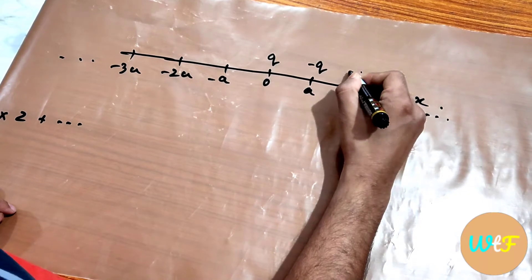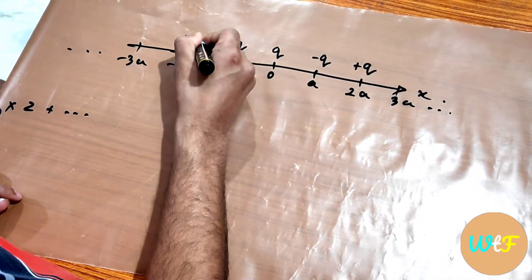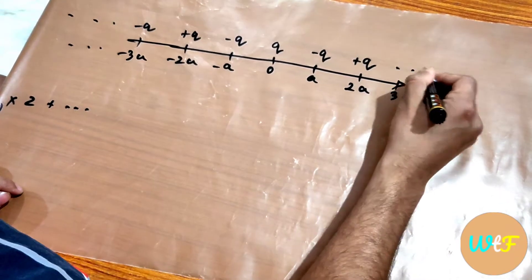And suppose we have a charge q here, minus q here, plus q here, minus q, plus q, minus q, and so on.